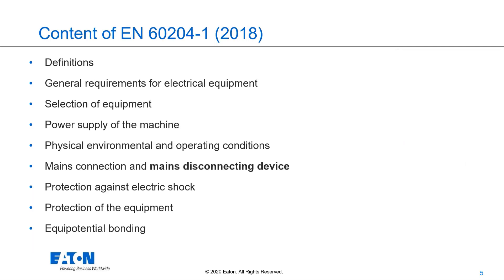What is the content of EN 60204-1? The standard starts with definitions, followed by some general requirements for electrical equipment. The selection of equipment is very important. The whole power supply of the machine is described, as well as physical, environmental, and operation conditions. Main connection and main disconnecting devices — including the main switch — are part of this standard.